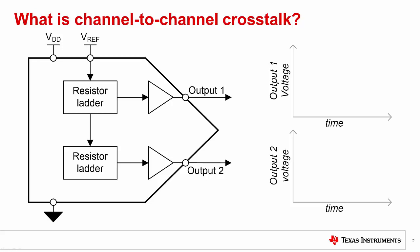AC crosstalk is where a transient on one channel of a DAC, output 1 in the figure, causes a temporary change in another channel, output 2 in the figure. Here we see as output 1 started to change, output 2 had a small glitch. This is usually measured similarly to glitch energy, where the total charge of the transient on the affected channel is measured.